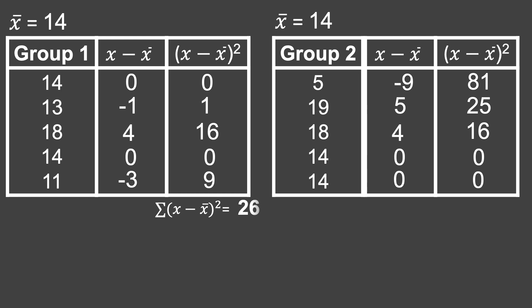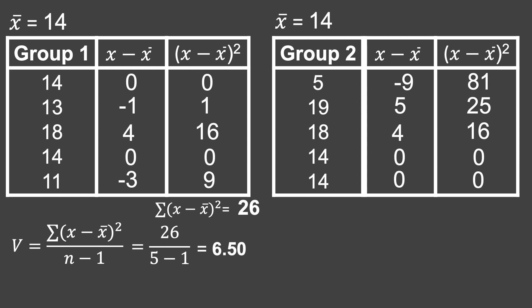For group one, the sum of the squared differences is 0 + 1 + 16 + 0 + 9 = 26. We express this as σ(x − mean)². Substituting into the variance formula: 26 all over 5 − 1, since the sample size n = 5. So 26 divided by 4 equals 6.50. Taking the square root of 6.50 gives the standard deviation, which is approximately 2.55.